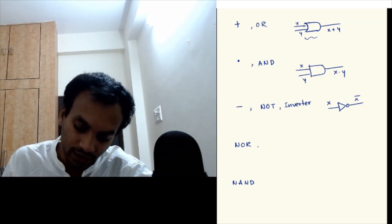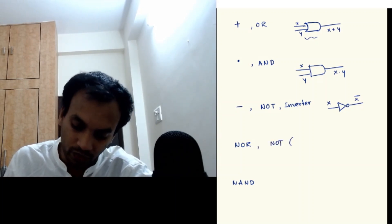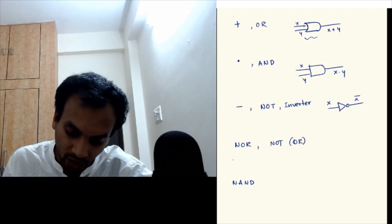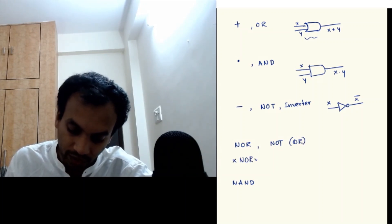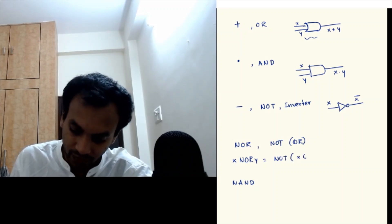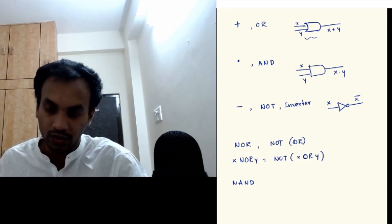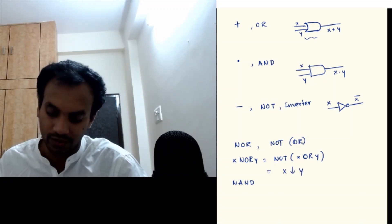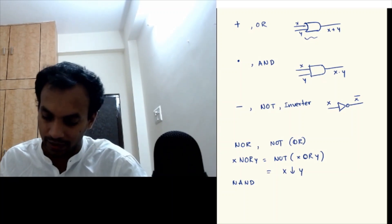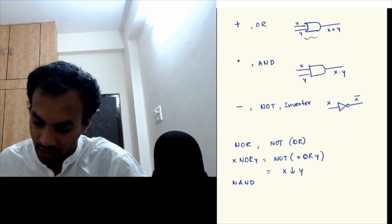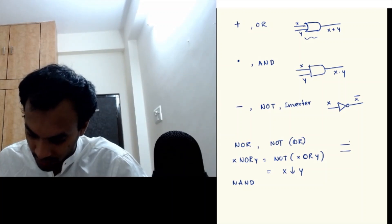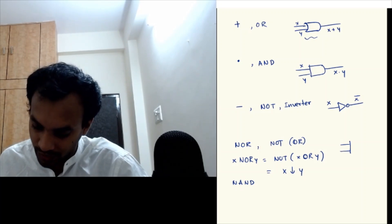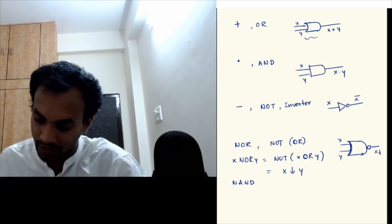NOR is actually NOT OR. X NOR Y is really NOT of X OR Y, and its symbol is written as X down-arrow Y. The gate symbol for NOR is the OR gate notation with a circle in front, giving output X NOR Y, i.e., X down-arrow Y.